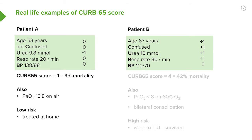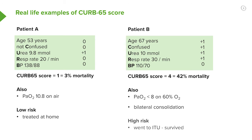Patient B, on the other hand, is 67 years of age — one point for that. Confused — one point. Urea of 10, which is greater than 7 — one point. Breathless with a respiratory rate of 30 — one point. No hypotension, so no point for that. That gives a CURB-65 score of 4, suggesting a mortality of about 42%. In addition, the PaO2 was less than 8 despite being on 60% oxygen, and there was bilateral consolidation. This is severe disease; the patient needs to go to intensive care and probably needs to be intubated and ventilated because of their marked hypoxia. In this situation, the patient actually survived, although given the severity of the illness it was touch and go.